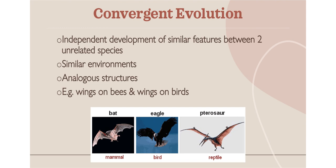Convergent evolution also gives us evidence for evolution. This is where two species independently develop the same kind of design to fit their environment — it's kind of the opposite of homologous structures. It's a different structure but the same function. We call these analogous structures. For example, wings: a bat, an eagle, and a pterosaur all have wings used for flying, but the structures are very different. The same applies to a bee's wings versus a bird's wings. Different structure, same function — showing that organisms change depending on their environment.